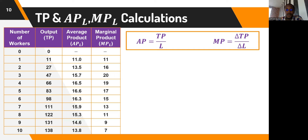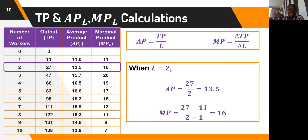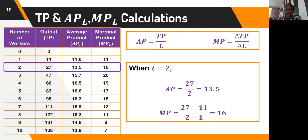For example, when the second person is employed, the total product is 27 units, giving an average product of 27 divided by 2, which equals 13.5. The marginal product of the second worker is calculated as: when the first worker was employed, total product was 11; when the second was employed, it became 27. So the change in total product (27 minus 11 = 16) divided by the change in labor (2 minus 1 = 1) gives a marginal product of 16 — meaning the second worker added 16 units of additional output.